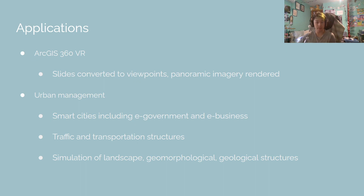VRGIS can be implemented in the planning of smart cities by simulating structures relating to landscape, geomorphology, geology, underground pipeline management, and more. When implemented correctly, the objects' sensors can be monitored, such as street crossings and traffic lights.